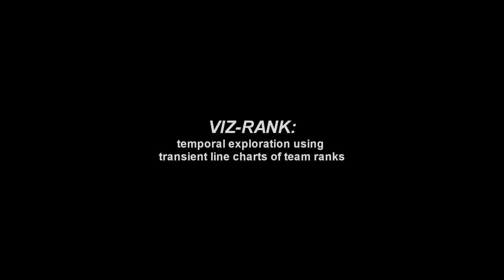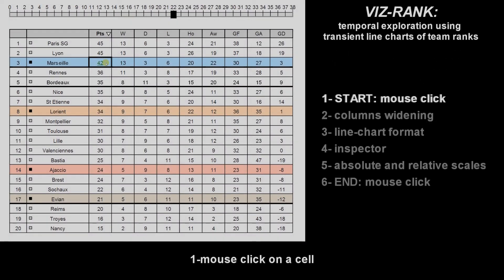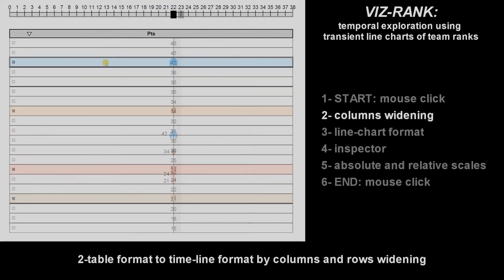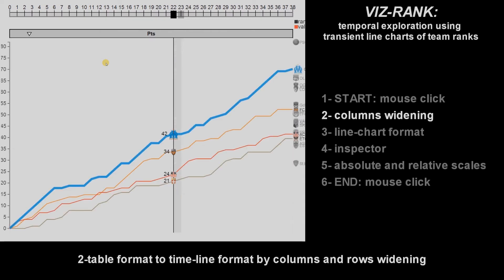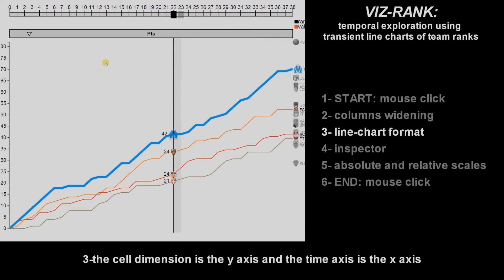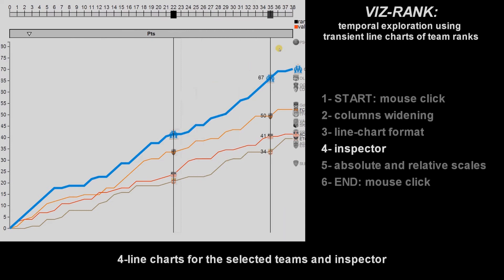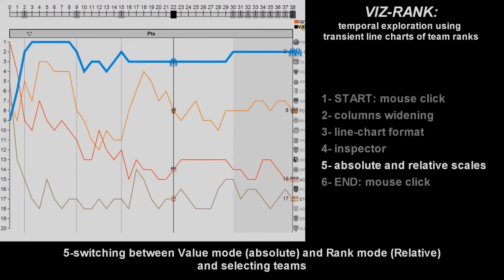The second technique, VisRank, uses line charts as a temporary overview of the championship. The user clicks a cell corresponding to a team and a dimension. VisRank animates the table into a timeline format by widening the columns and rows. The y-axis of the chart represents the selected dimension's values, while the x-axis represents time. One line chart is displayed for each previously selected team using semantically resonant colors. An inspector shows the values of each line chart. VisRank provides two scales: an absolute scale, mapping line charts on the dimension values, and a relative scale, mapping line charts on ranks.